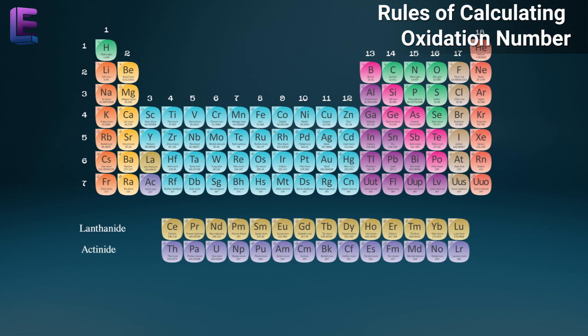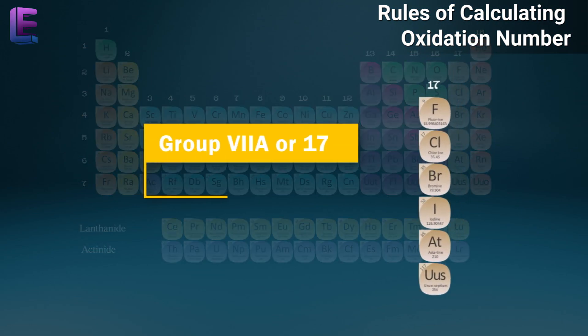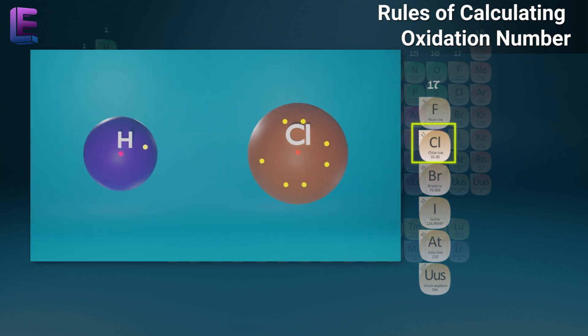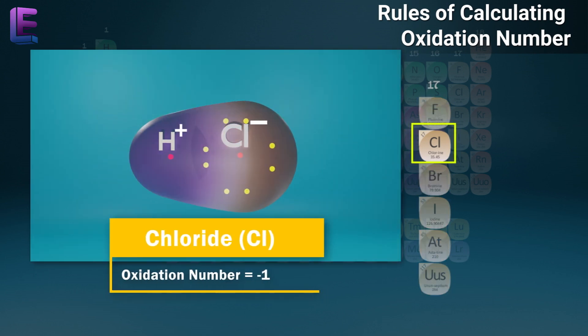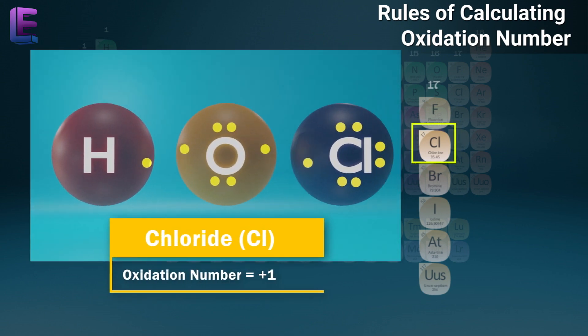All group 17 atoms have oxidation numbers of minus one, except when the electronegativity is too high. For example, the oxidation number of chlorine in HCl is minus one, while it is plus one in HOCl.